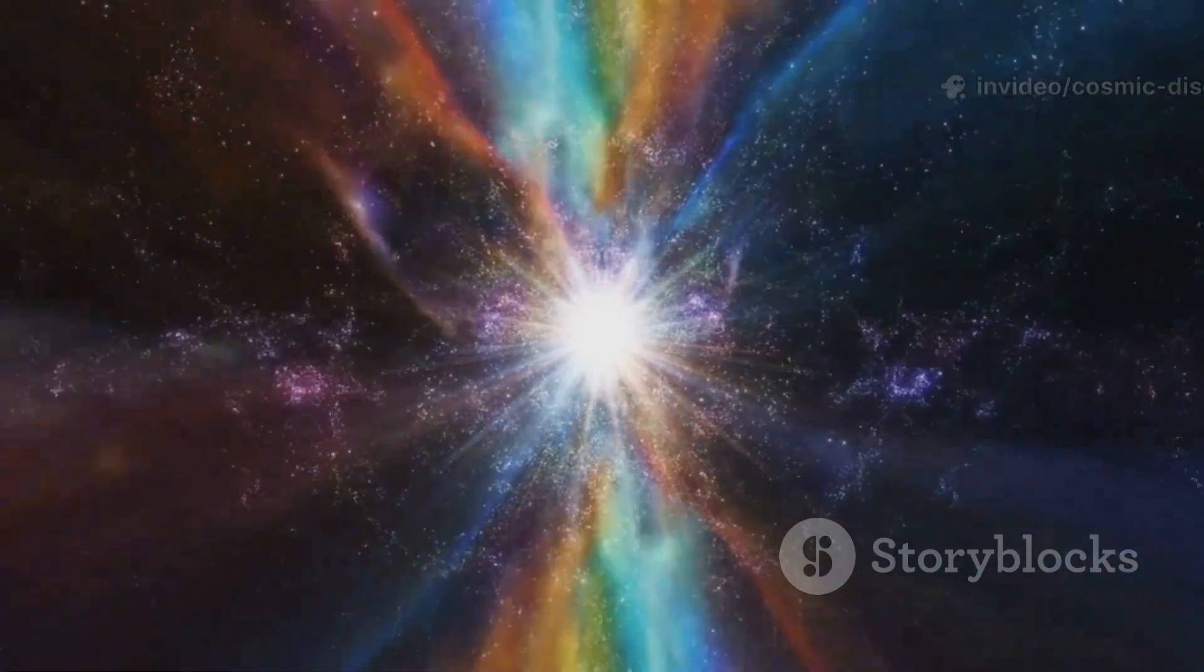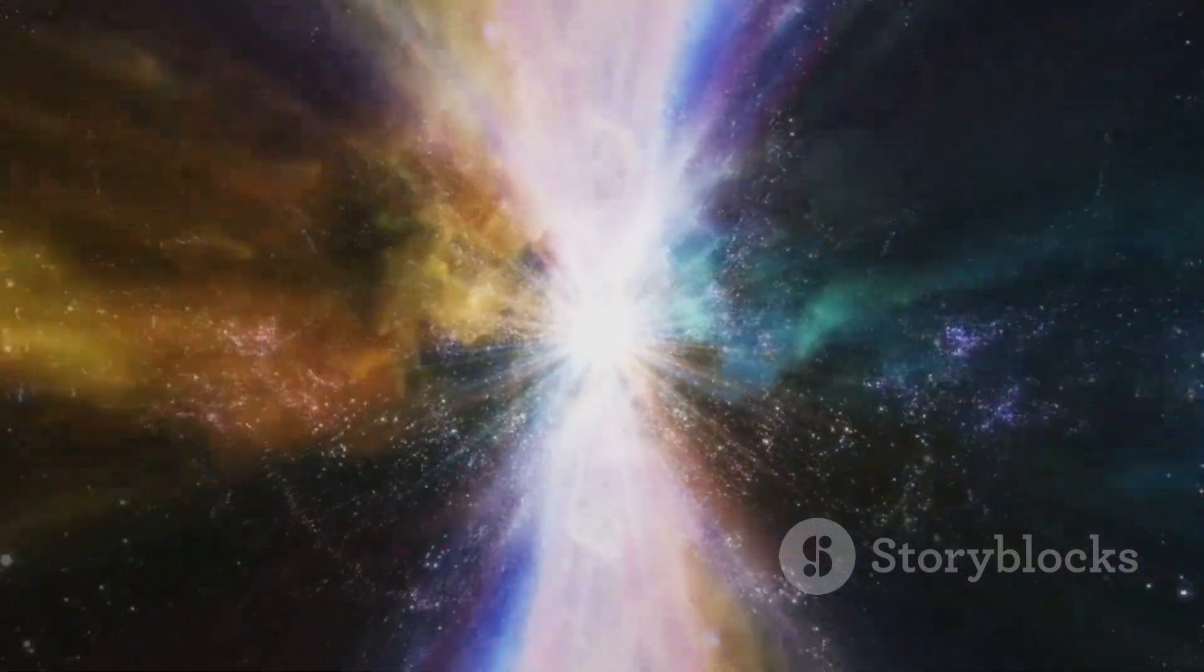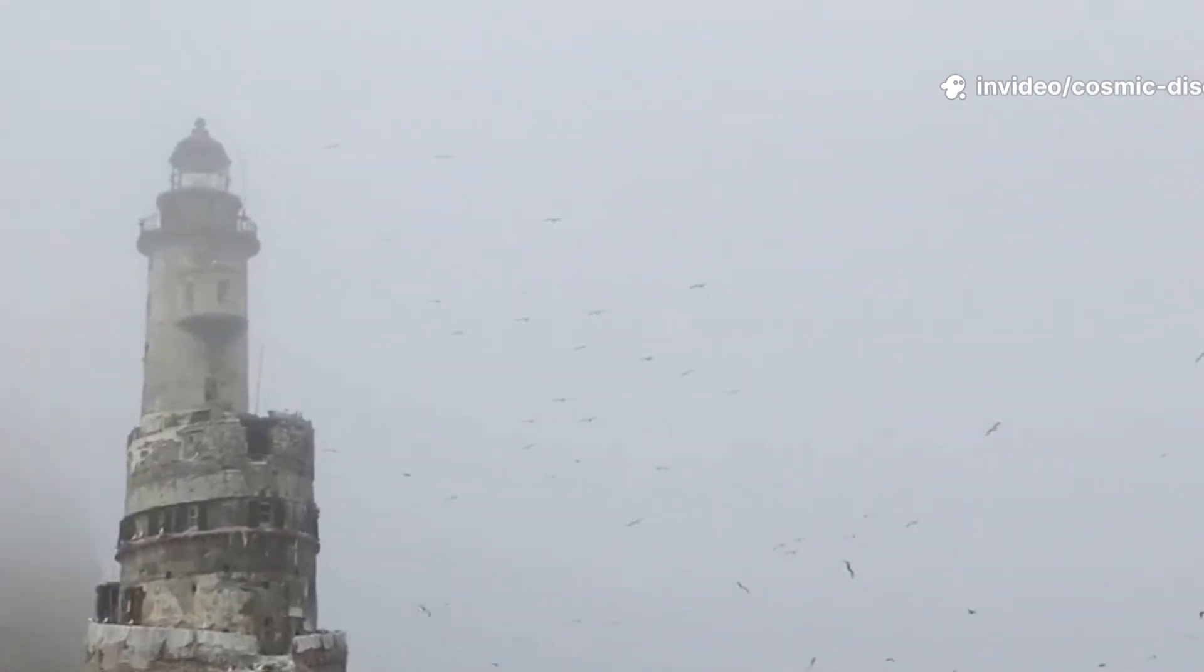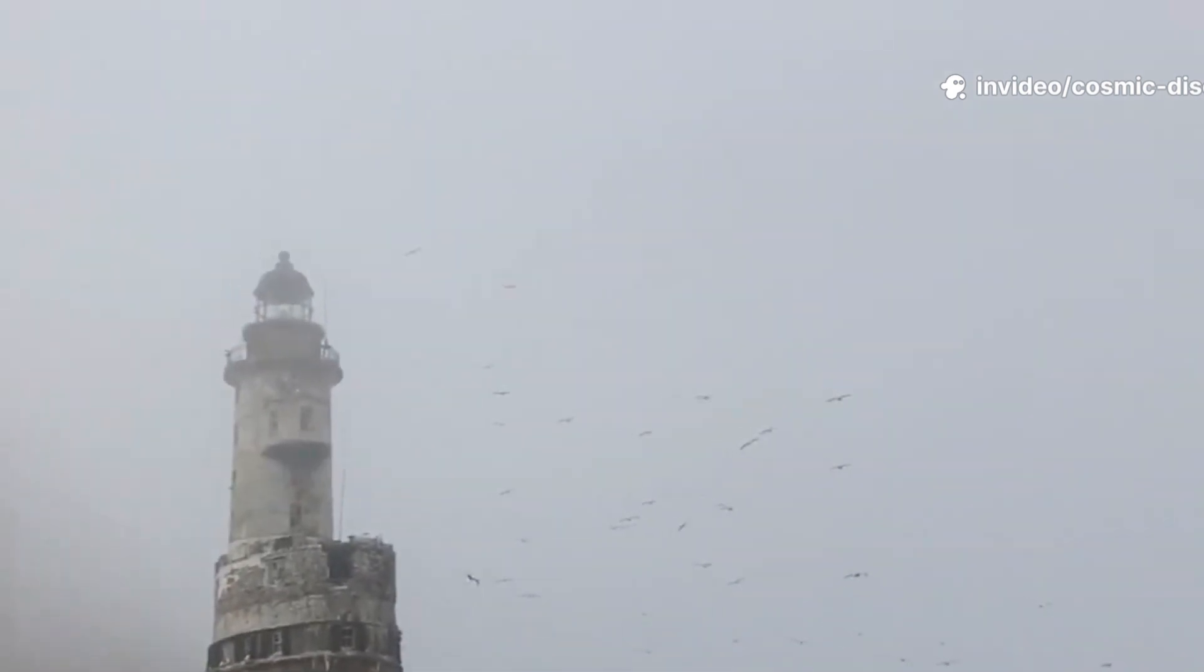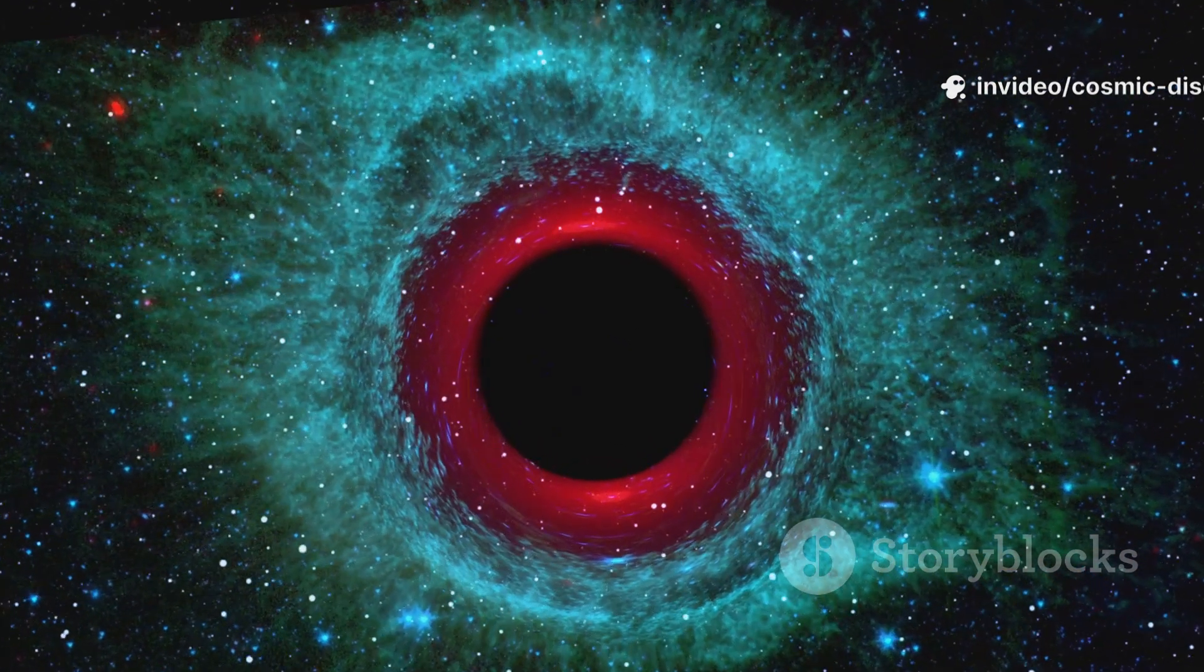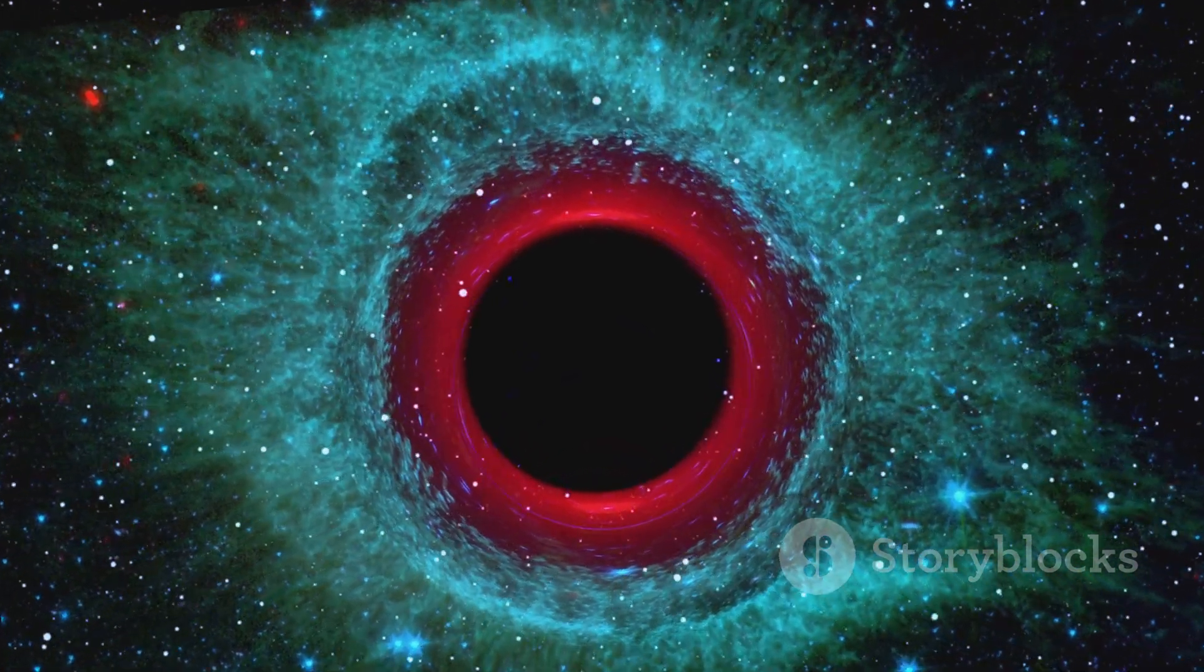These clouds block visible light, absorbing and scattering the photons before they can reach our telescopes. It's like fog hiding a distant lighthouse, its beam unable to penetrate the dense atmosphere. The dust preserved the core's secrets, shielding it from our prying eyes for so long.